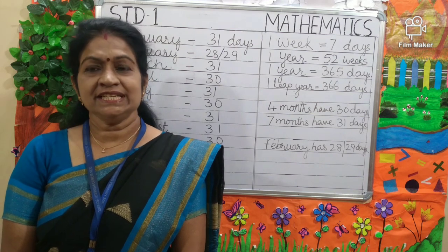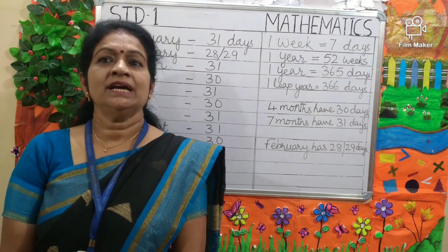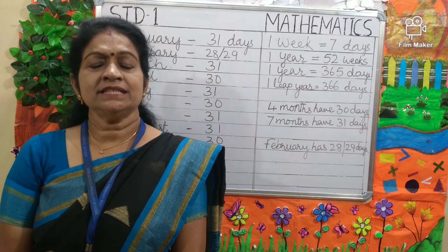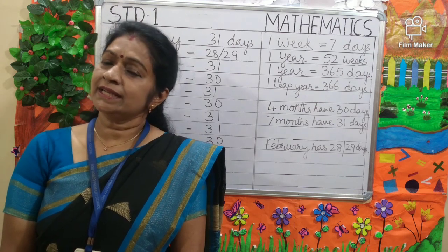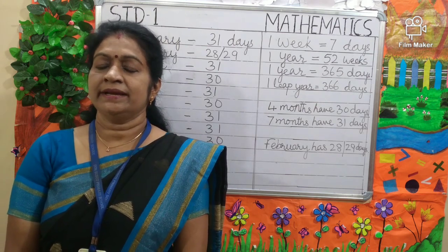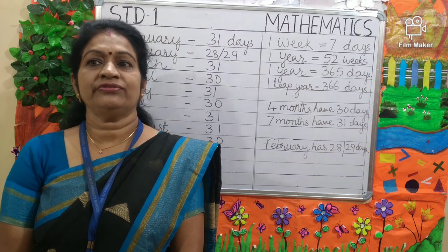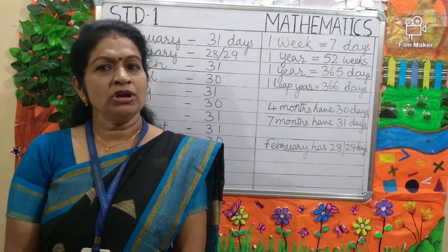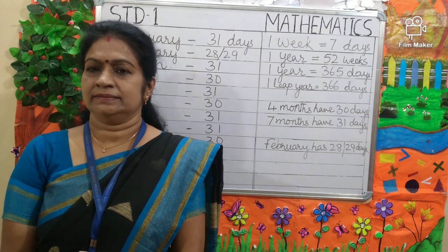Now children, we will be learning about a calendar. What is a calendar, students? A calendar shows the months, days and dates of a year. We have 12 months in a year.